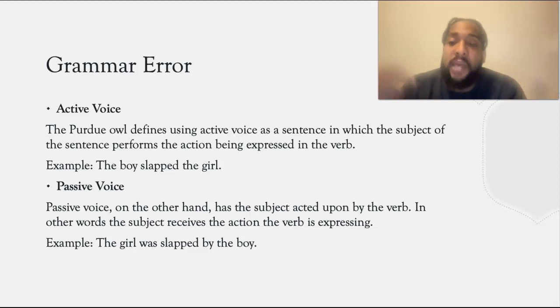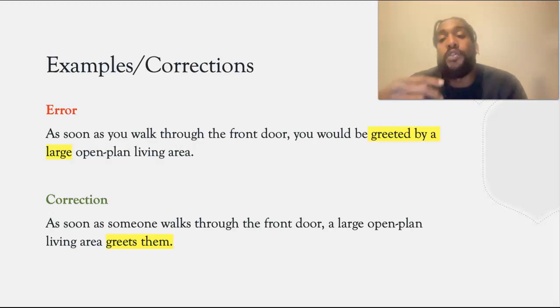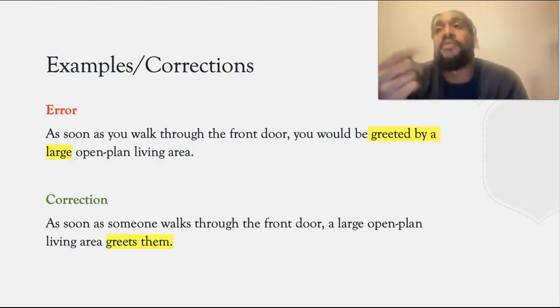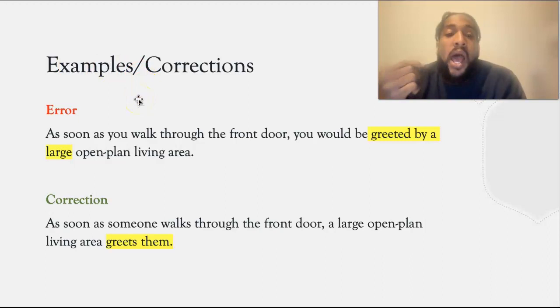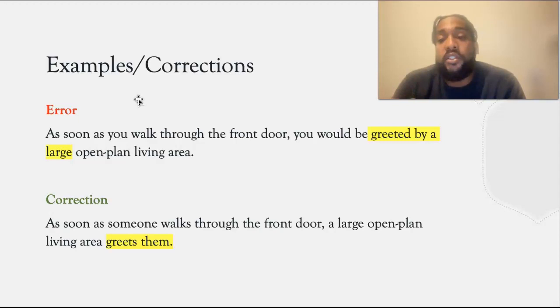In my essay, I made the mistake of using the passive voice as opposed to the active voice. I read in the Purdue Owl that the passive voice is only used in writing mainly for scientific research. Some examples of the mistakes I made in my essay were as follows. The first one is: as you walk through the front door, you will be greeted by a large open plan living area. This is passive voice because the subject, which is you, is receiving the action of being greeted by a large open plan living area.